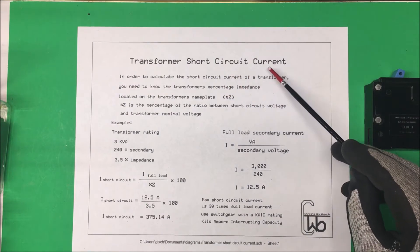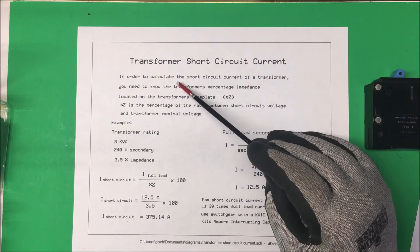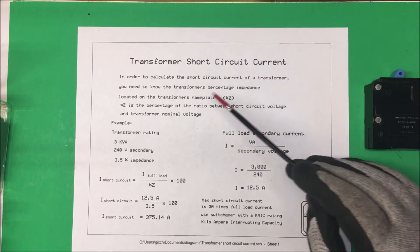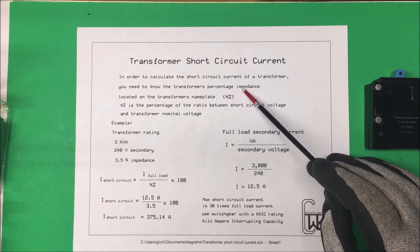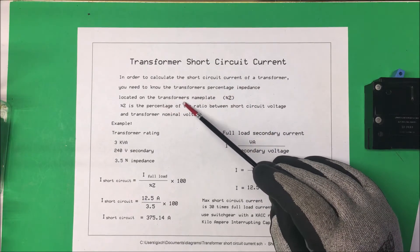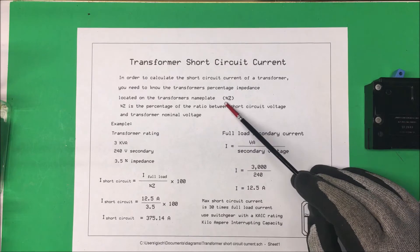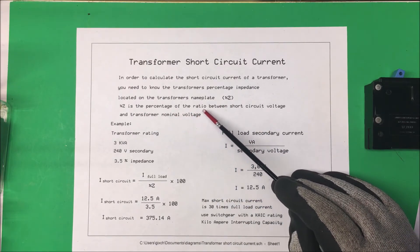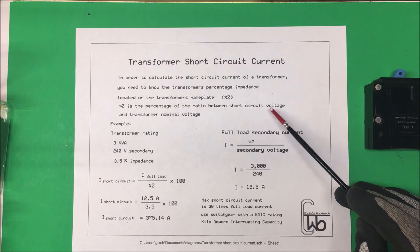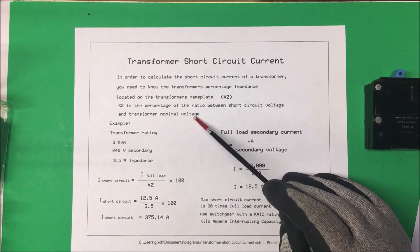Let's take a look at a transformer short circuit current. In order to calculate the short circuit current of a transformer, you need to know the transformer's percentage impedance, and that's usually located on the transformer's nameplate under percent Z. The percent Z is a percentage of the ratio between a short circuit voltage and the transformer's nominal voltage.